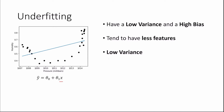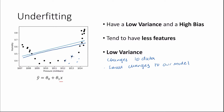By low variance we mean that changes to our data result in small changes to our model's predicted values. For example, if we were to add more data points and remove a few, our model might just move down slightly and there isn't a significant change. By high bias we mean that our model assumes more about the form or trend that our data takes — so here we're assuming a linear model when clearly that is not the case.